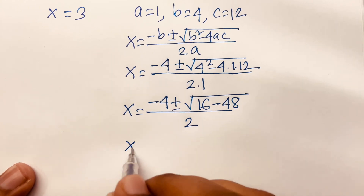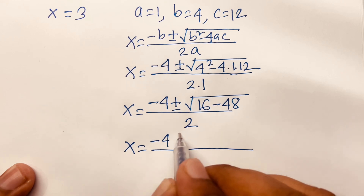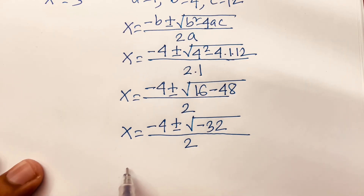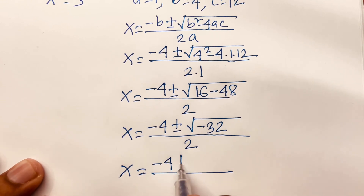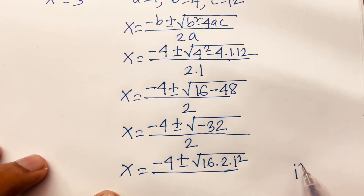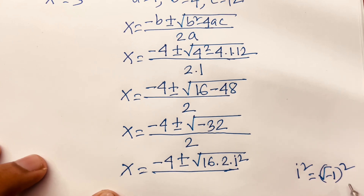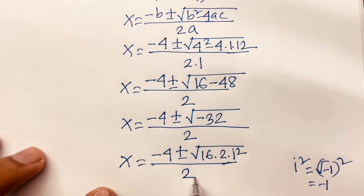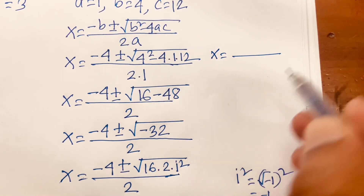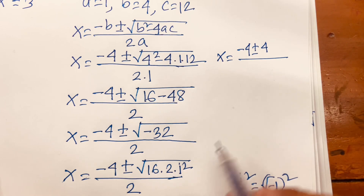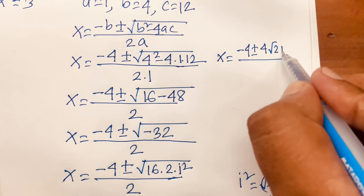So x equals minus 4 plus or minus square root of minus 32 over 2. Since minus 32 equals 16 times 2 times i squared, where i squared equals minus 1, we get square root of minus 32 equals 4 times square root of 2 times i. So x equals minus 4 plus or minus 4√2·i over 2.